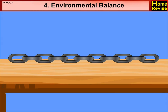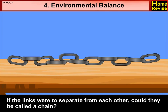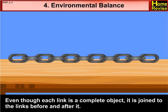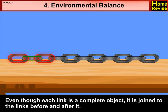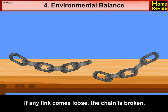Look at the picture. There are several links in this chain. If the links were to separate from each other, could they be called a chain? Even though each link is a complete object, it is joined to the links before and after it. If any link comes loose, the chain is broken.